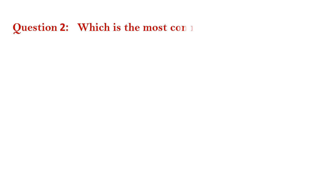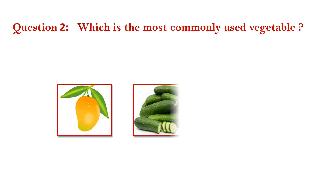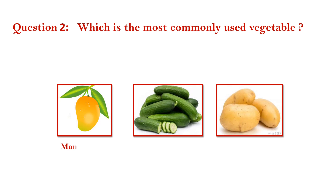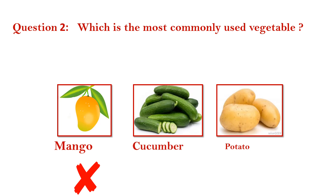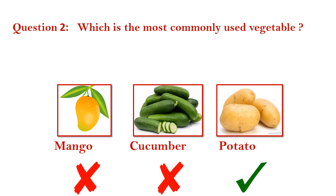Question number 2. Which is the most commonly used vegetable? Mango — wrong. Cucumber — wrong. Potato — right. The answer is potato.